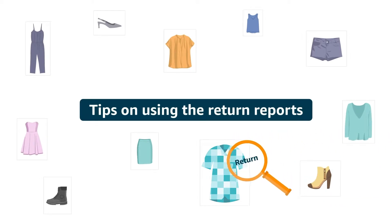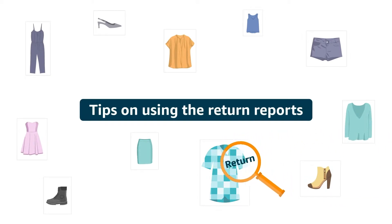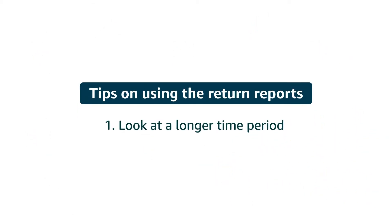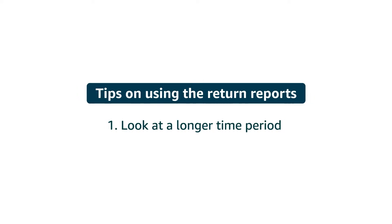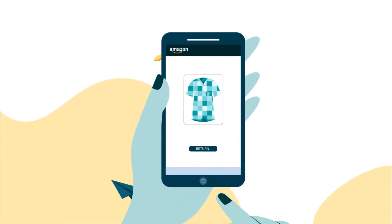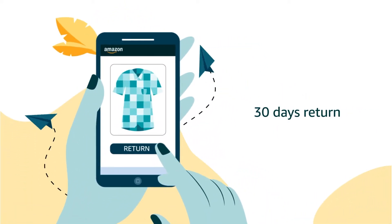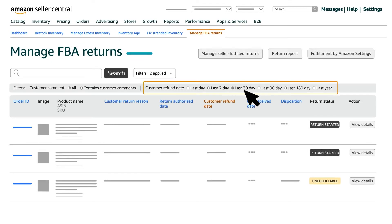Here are a few tips for reading and using the reports to help you identify returns and improve return rates. First, choose a time period that is long enough to capture trends when you request the reports. Customers typically have 30 days to return items, and two to six months of data allow you to see trends.